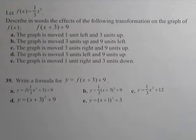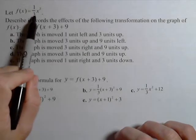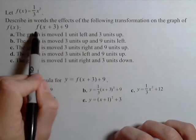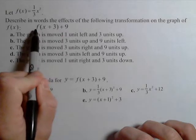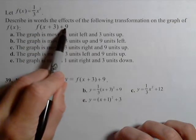In this video, we're gonna talk about the effects of a transformation. We're given the original function as 1/3 x squared, and we need to figure out what's happening if we do the following: f of x plus three in parentheses plus nine.